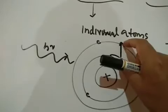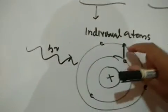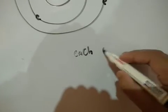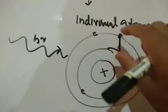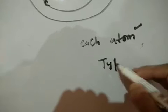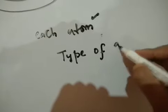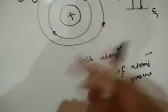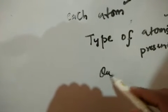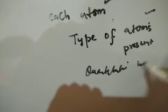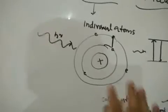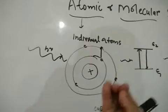Only that wavelength is absorbed from the white light whose energy is exactly the difference between the two energy levels. Each type of atom — whether hydrogen or any other — has characteristic energy states. From atomic absorption spectroscopy we can determine the type of atom present in the sample. From an analytical perspective, we can identify which element's atoms are present, and the intensity of light absorbed gives us quantitative information — the concentration of the sample.